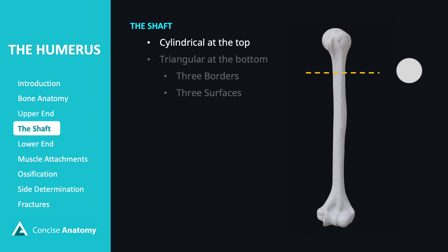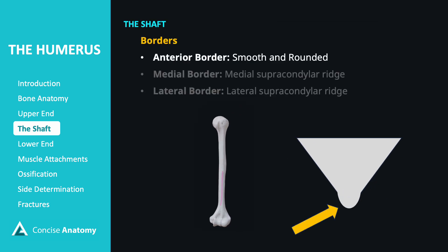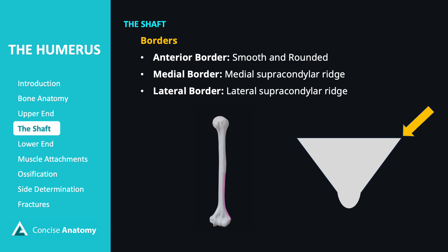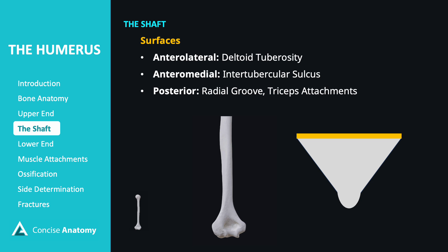The shaft of the humerus is cylindrical at the top and triangular at the bottom. Its lower half has three borders and three surfaces. The anterior border is smooth and rounded. The medial border features the medial supracondylar ridge, and the lateral border features the lateral supracondylar ridge, both serving as muscle attachment sites. The surfaces include the anterolateral surface with the deltoid tuberosity, the anteromedial surface with the intertubercular sulcus, and the posterior surface with the radial groove for the radial nerve and triceps muscle attachment.